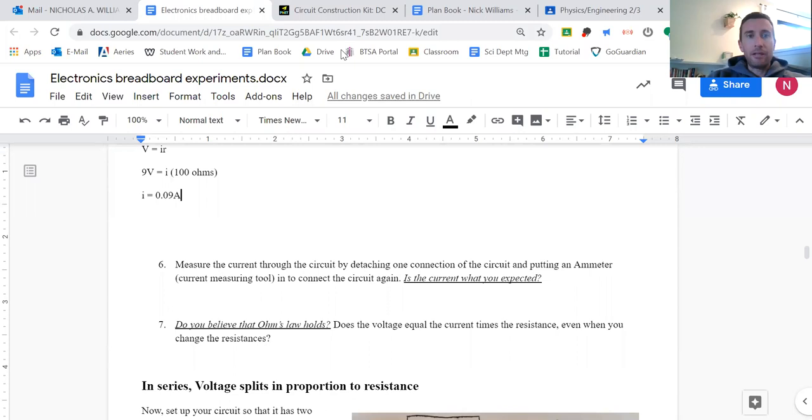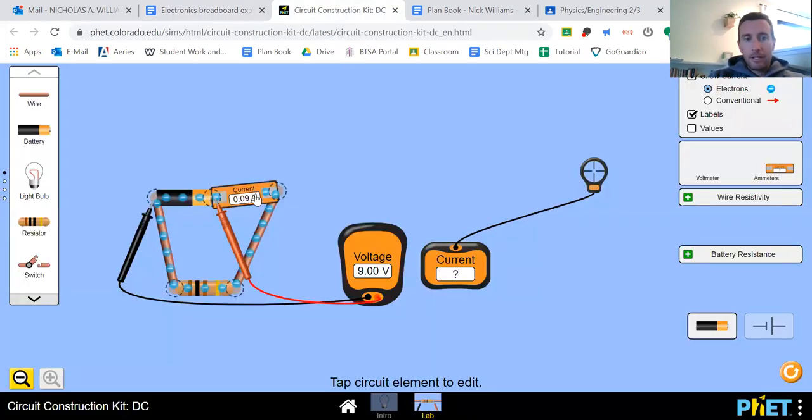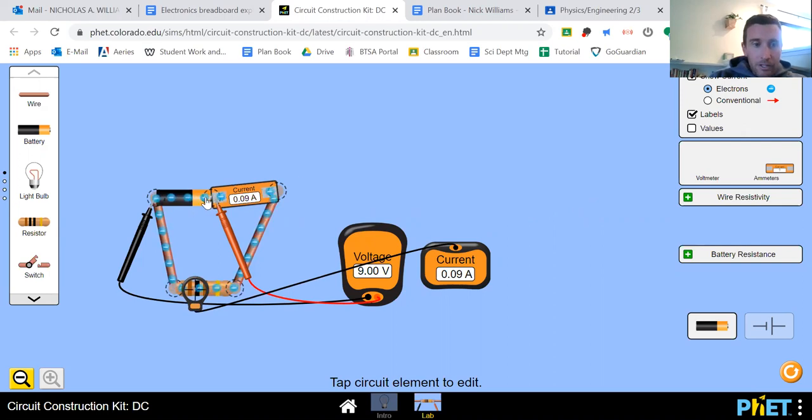Measure the current. Conveniently, I left that already set up. The current reads 0.09 amps, or I can move this one over, and it reads 0.09 amps. You'll notice that the current is still moving. It's just moving really, really, really slowly. Some might say ten times slower, since I increased the resistance by ten times.